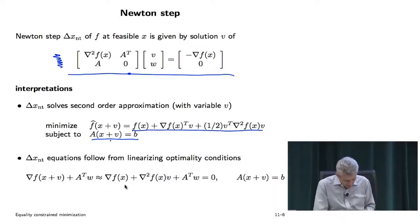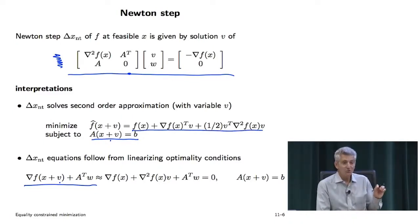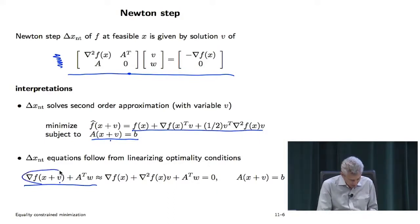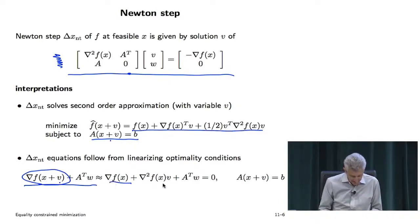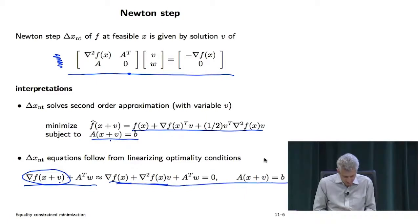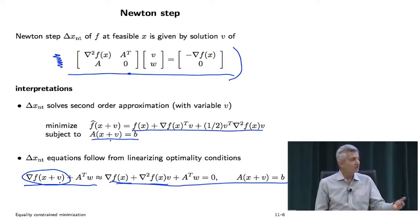Another way to say it: what you really want is that, when you take a step, you drive the dual residual to zero. That expression is in general non-affine. An approximation of the gradient at x plus v is: gradient at x plus the Hessian times the step. If you solve these two equations, you get the Newton step. So you can either call the linearized method on the optimality conditions and solve the linear equations, or you can call the quadratic method on the original problem — either way, they're the same thing.